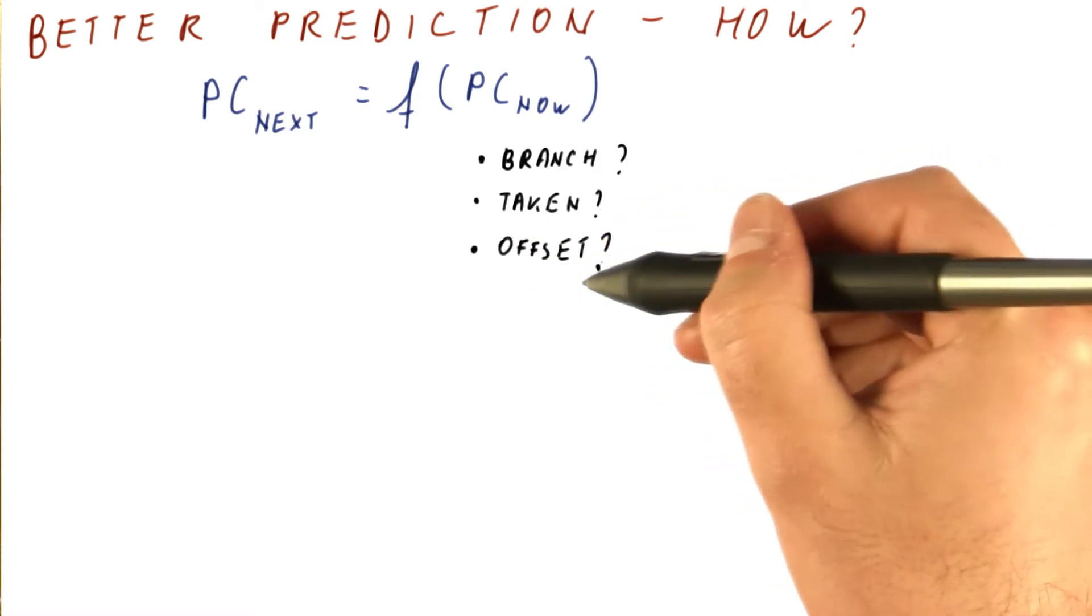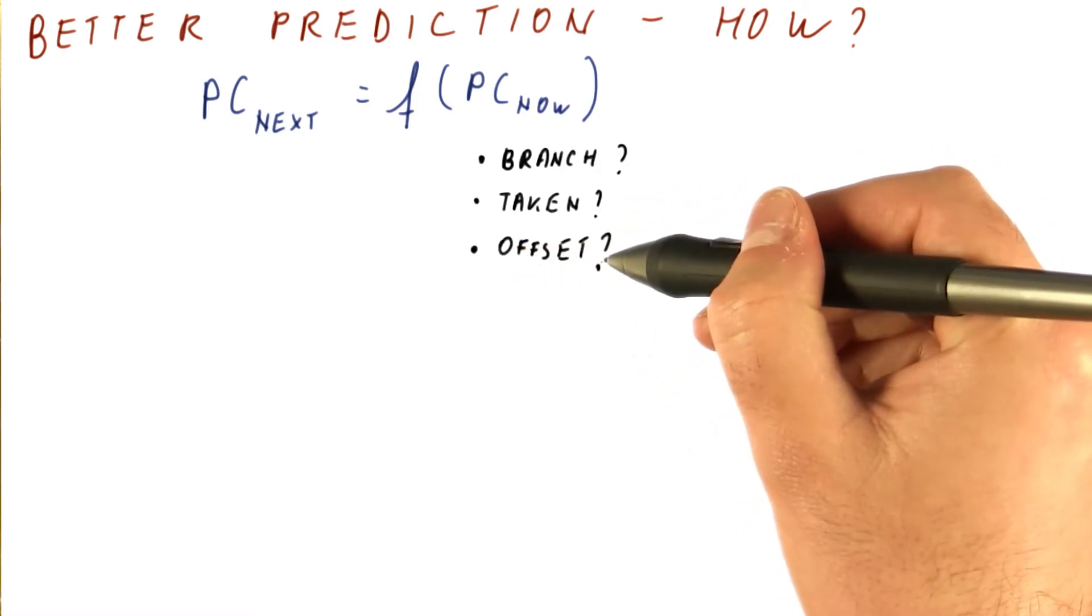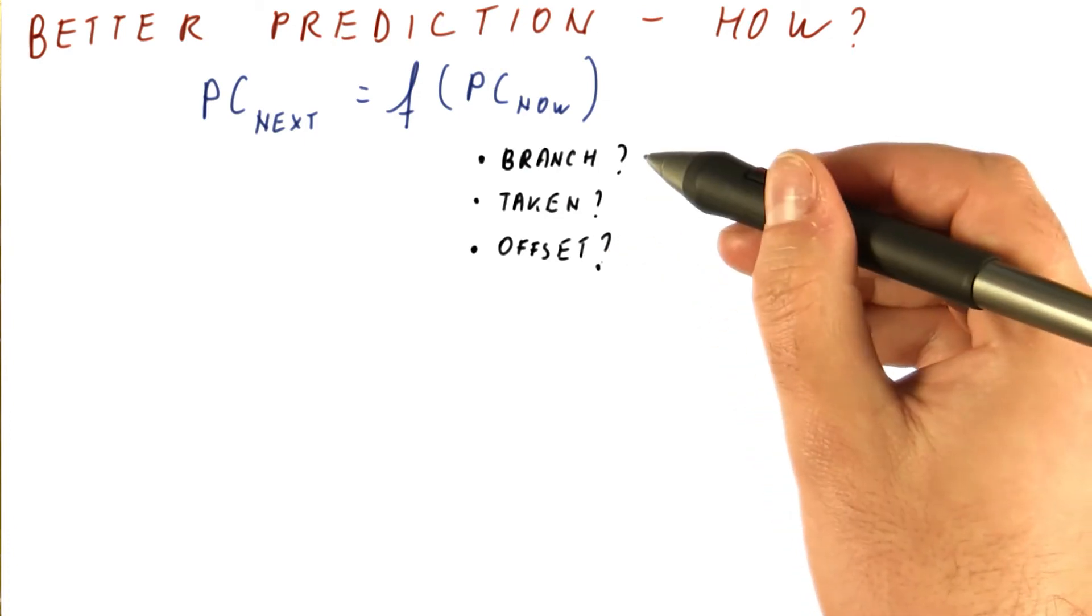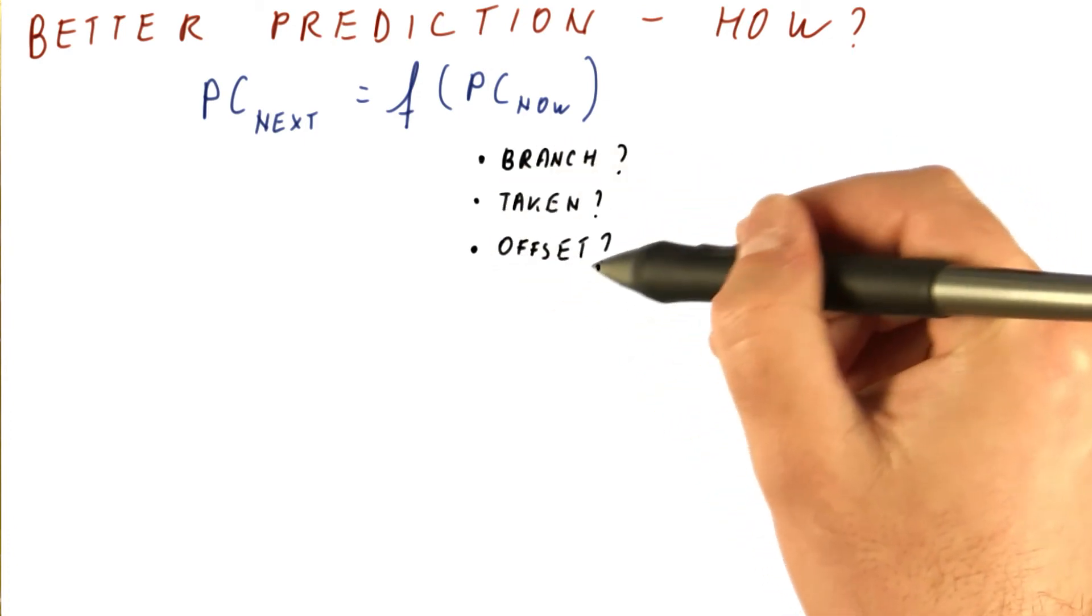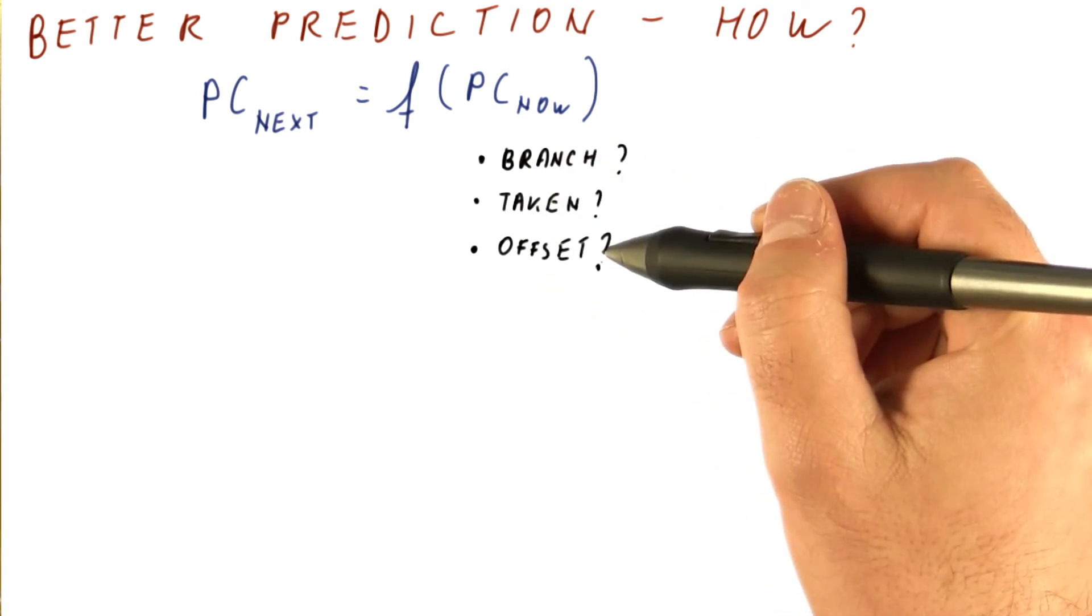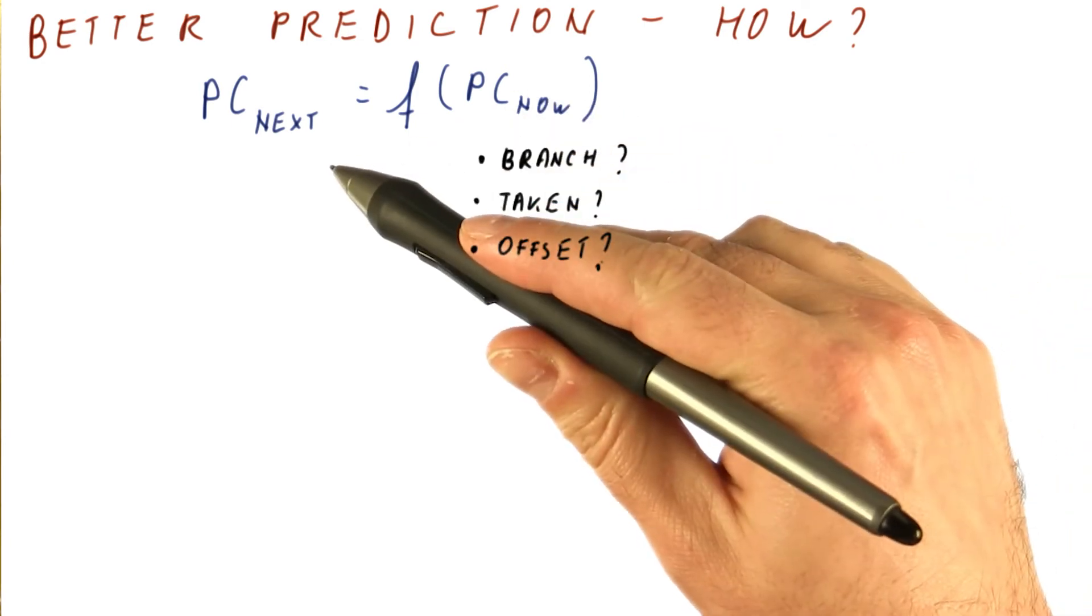What is the offset field of the instruction? If this is a branch, this is what will be added to the PC to form the target address if it's taken. But we don't know that either because we haven't fetched the instruction. So really, we don't know for sure anything that might be really useful in forming the good prediction.